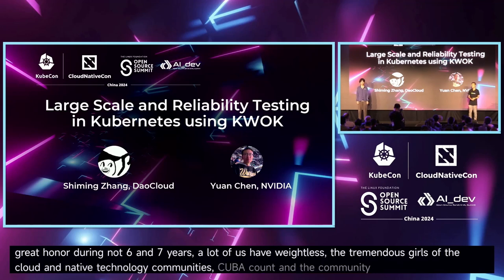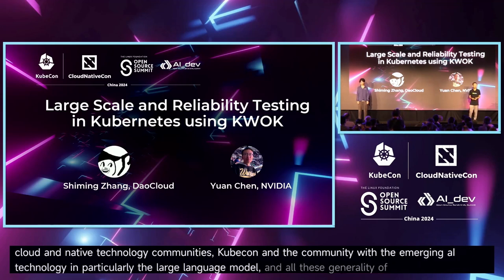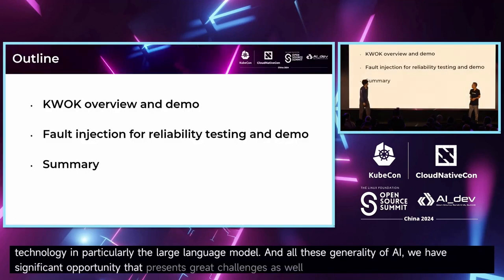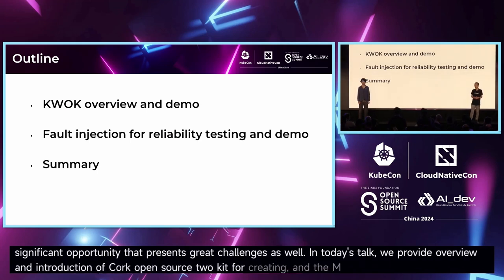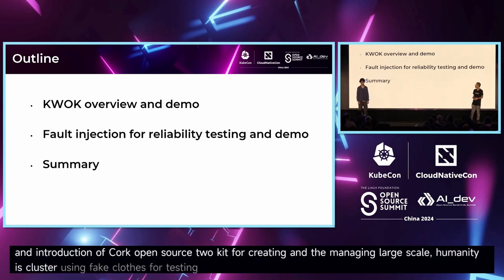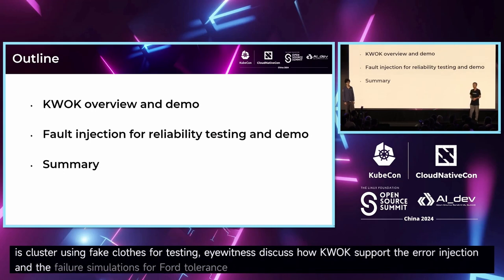With the emerging AI technology, particularly large language models and generative AI, we have a significant opportunity that presents great challenges as well. In today's talk, Shimin will provide an overview and introduction of Quark, an open-source toolkit for creating and managing large-scale Kubernetes clusters using fake nodes for testing. I will then discuss how Quark supports error injection and failure simulations for fault tolerance. We conclude the talk with a summary.